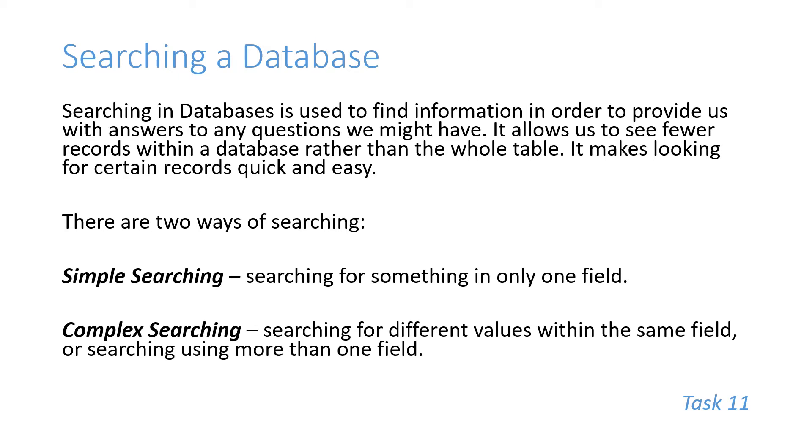There's two ways that we can search a database. The first one being a simple search, and that's where I would search for something in only one field of the table. If I wanted to search a database table that contained information about all school pupils and I wanted to complete a simple search by searching for only the field of all S6 pupils, that would be a simple search because I would narrow the database table down to only the records that held all S6 pupils.